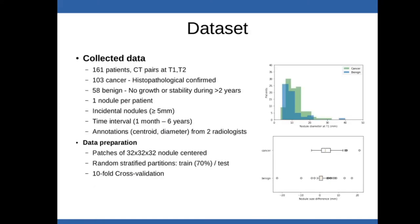To train this model, we collected a dataset composed of 161 patients, each of them with a pair of CTs taken at two different time points. 103 of these pairs were confirmed cancer cases and 58 of them were benign cases with stability or no growth during two consecutive years. Each pair of CTs has annotated a single nodule with a diameter greater than 5 mm. The time between the studies was between one month and six years.